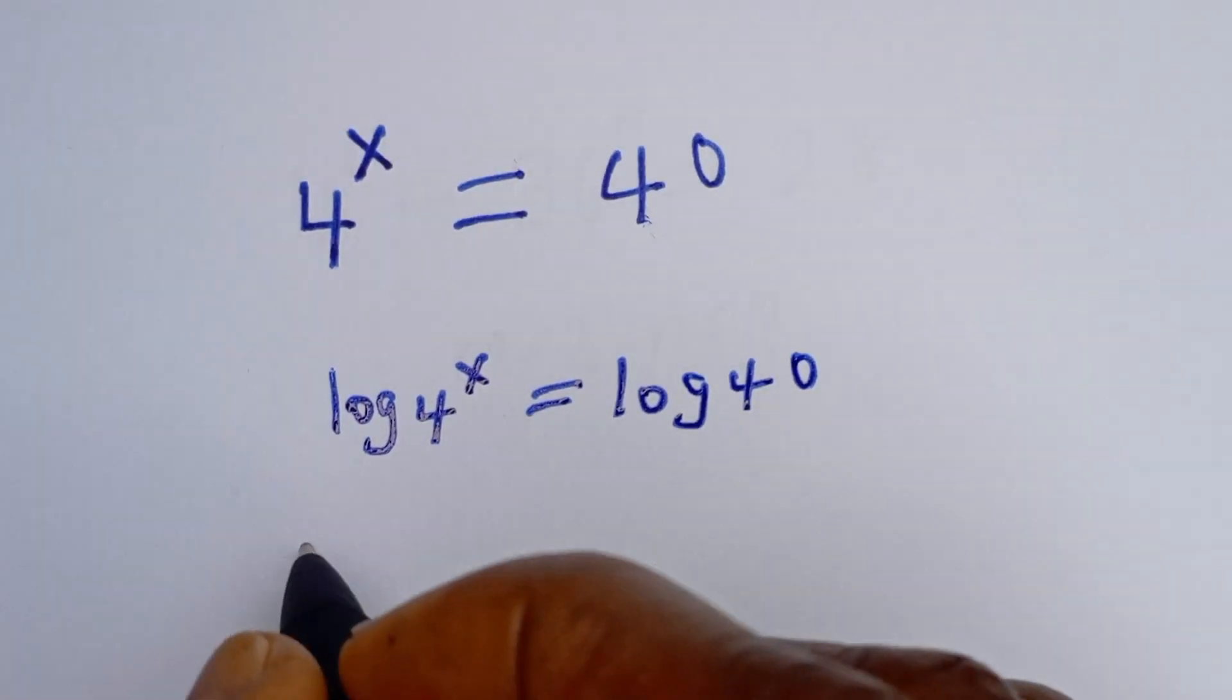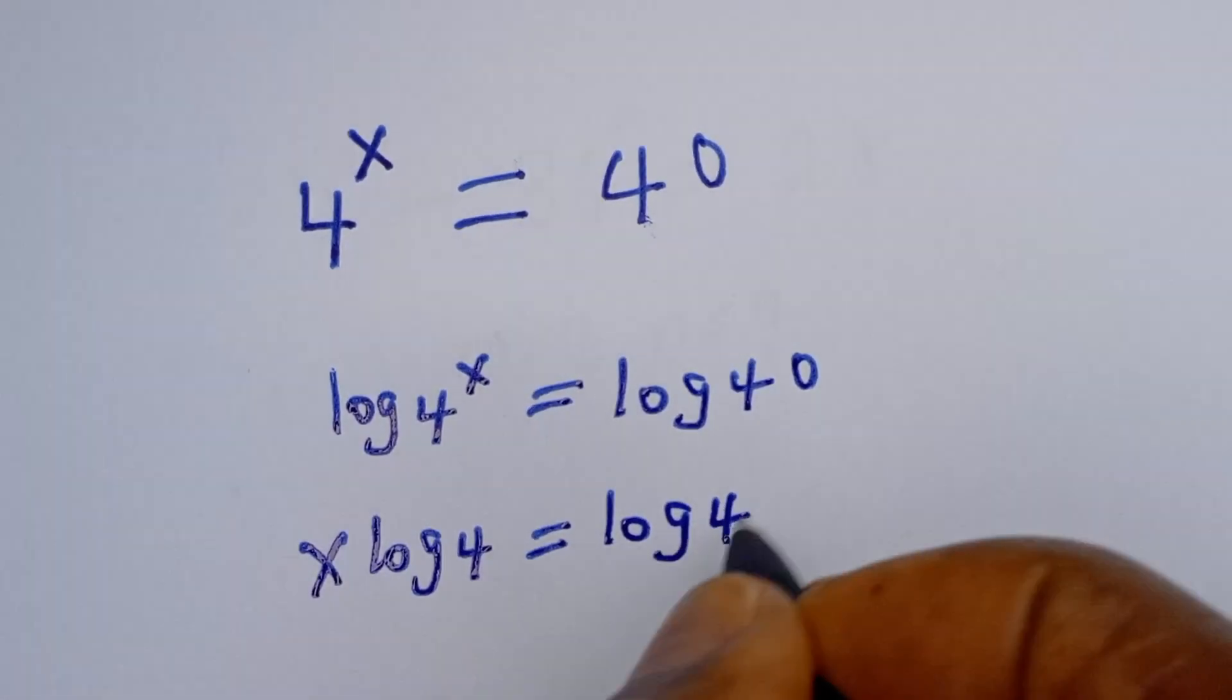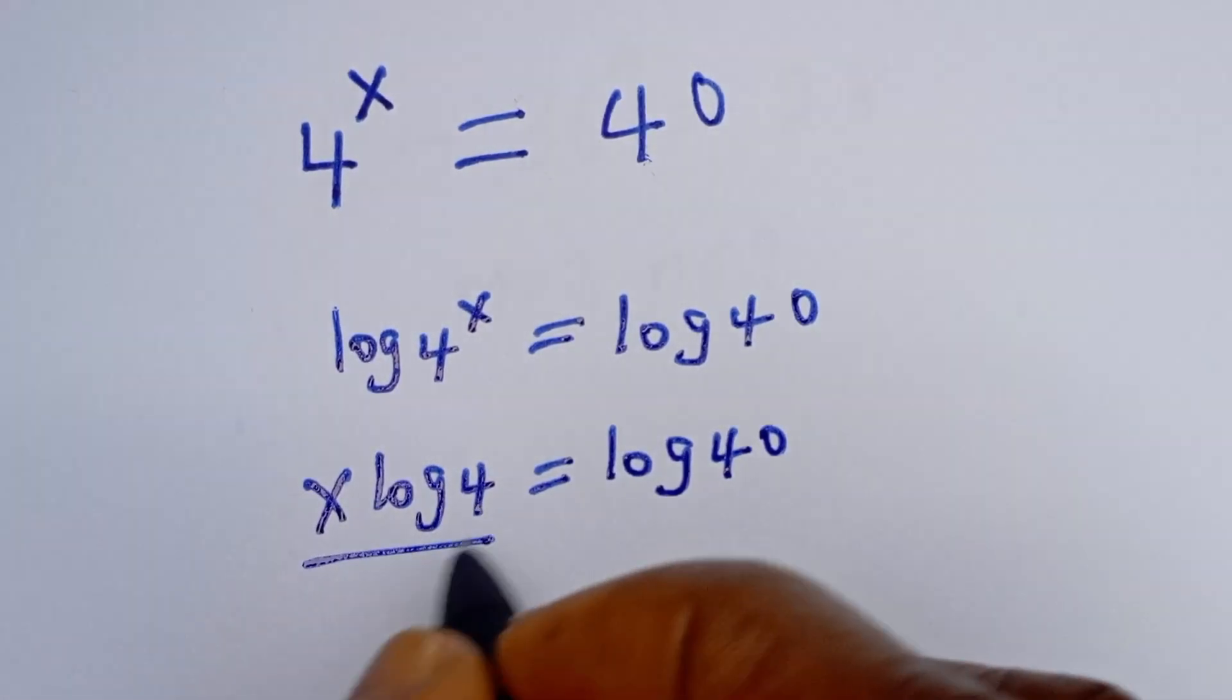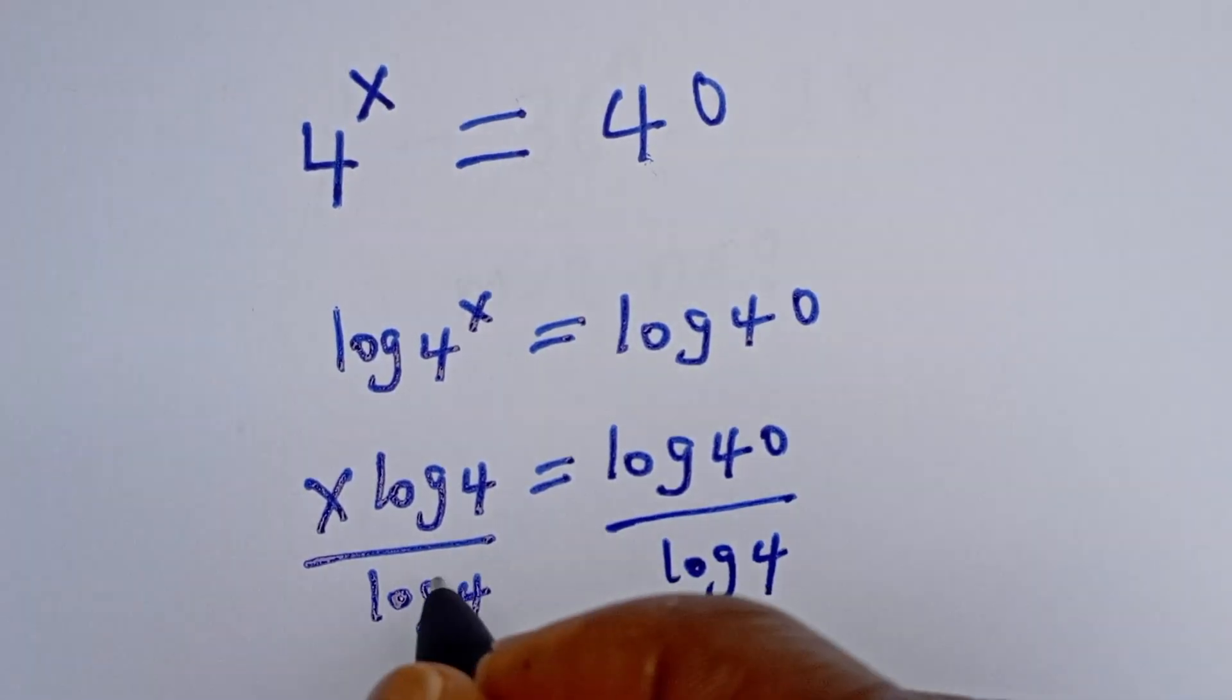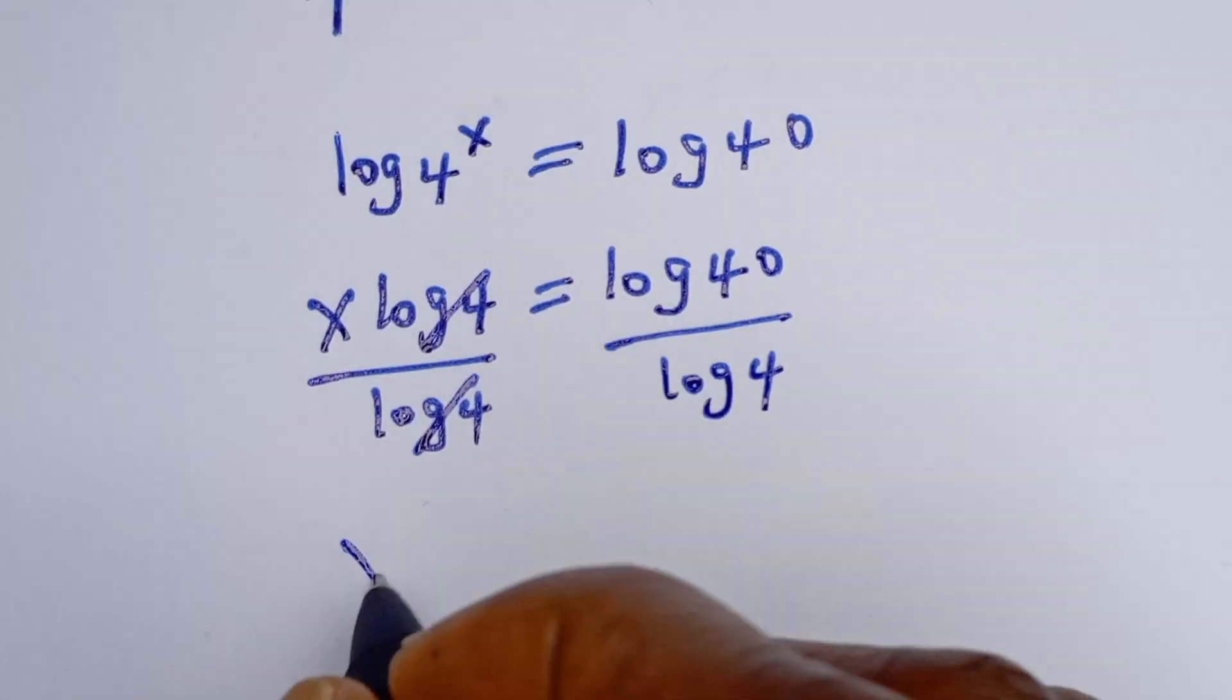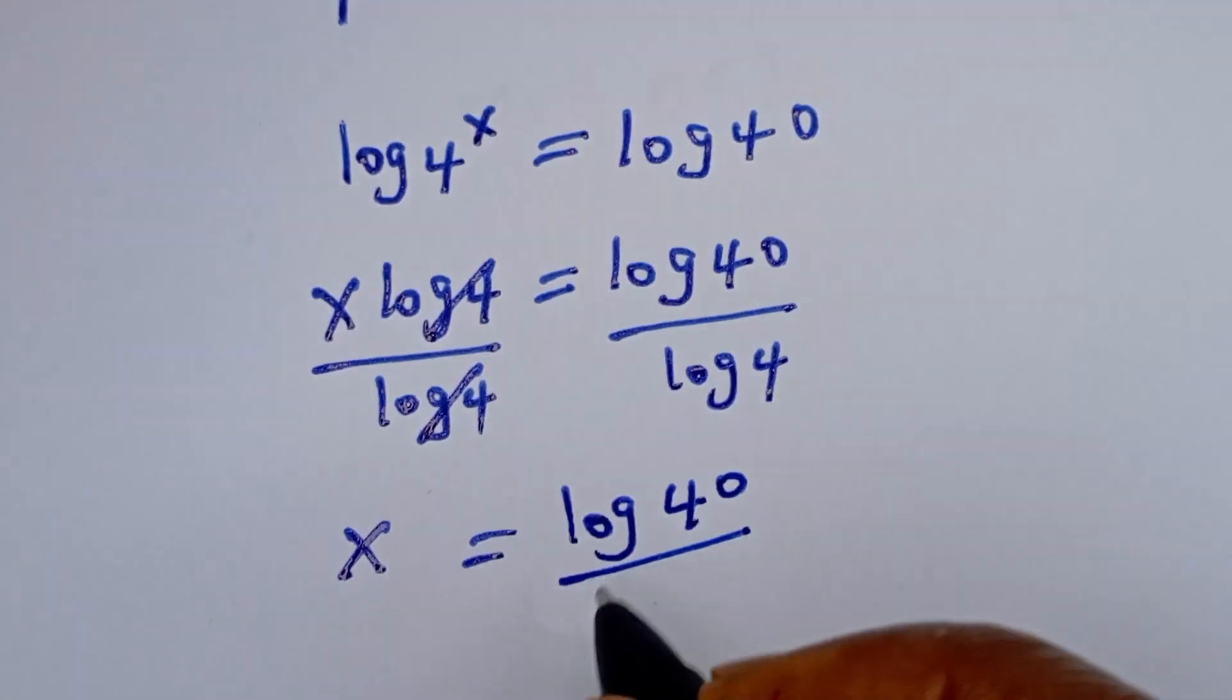Then we have x log 4 is equal to log 40. Now let's divide both sides by log 4. This divided by log 4, this divided by log 4. This will cancel, so x is equal to log 40 divided by log 4.